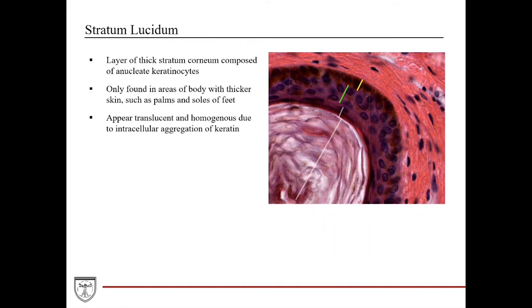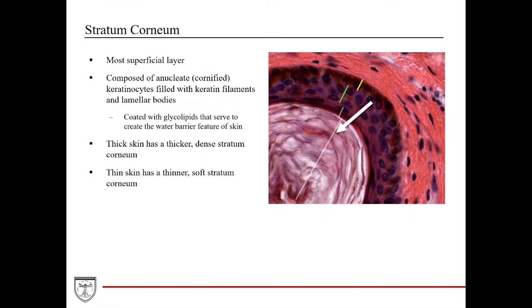The stratum lucidum is a layer between the granulosum and the corneum, only found in areas of the body with thicker skin, such as the palms and the soles of the feet. It is known for having a thick stratum corneum composed of anucleate keratinocytes, and it appears translucent and homogeneous due to the intracellular aggregation of keratin. The stratum corneum is the most superficial, keratinized layer. It is composed of anucleate or cornified keratinocytes filled with keratin filaments and lamellar bodies, and is also coated with glycolipids, which creates the water barrier feature of the skin — lipids are hydrophobic, which helps waterproof the skin.